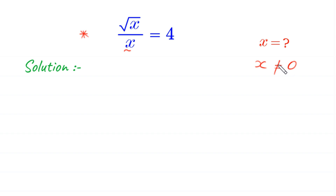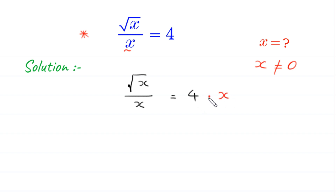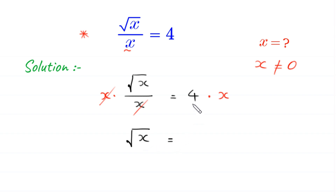Now we multiply both sides of this equation by x. We have root x over x equals 4, and we multiply both sides by x. The x's cancel on the left-hand side, and we are left with root x equals 4x.